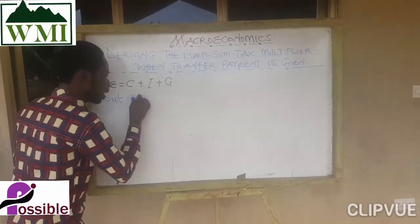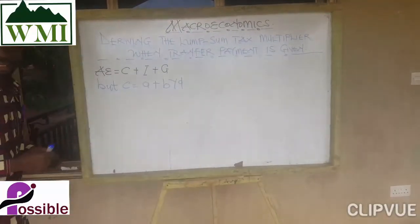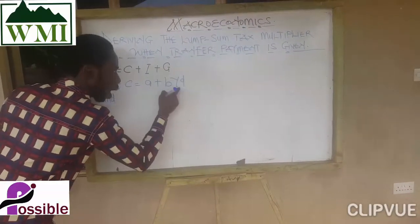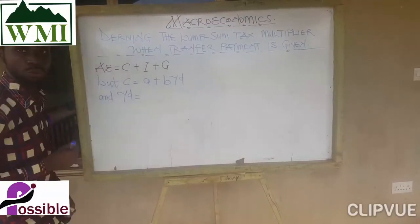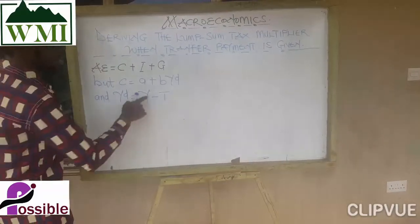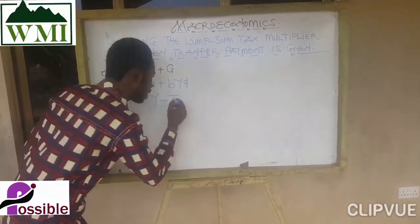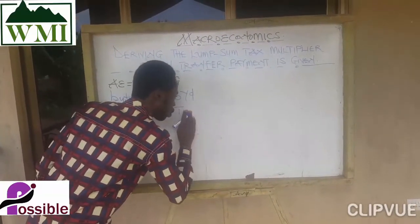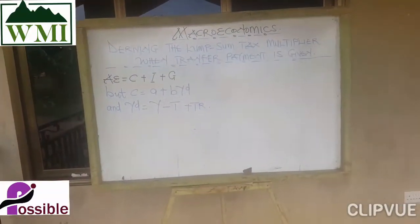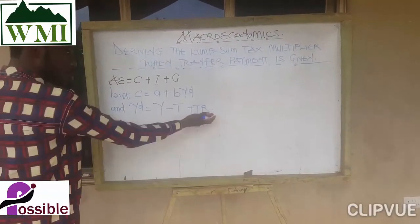Consumption C is equal to A plus B times disposable income (YD). Disposable income is equal to income minus tax. Now, when transfer payment is given, we add it: disposable income becomes Y minus T plus TR.